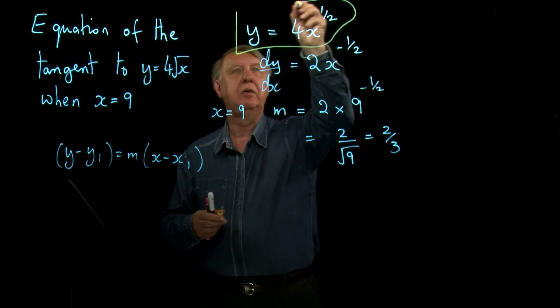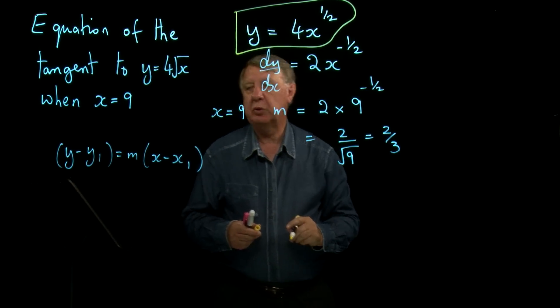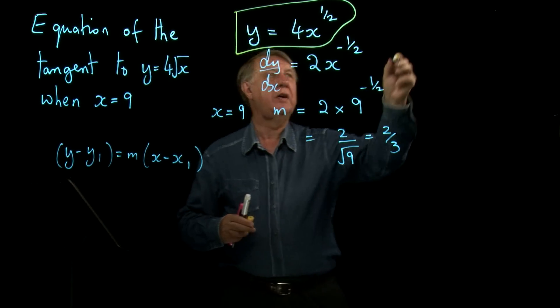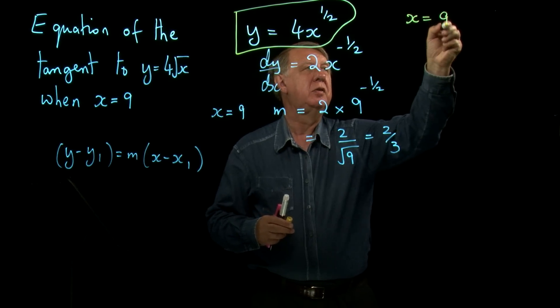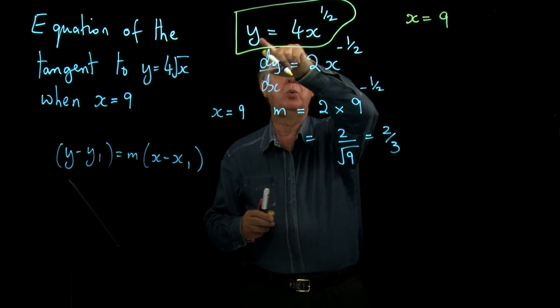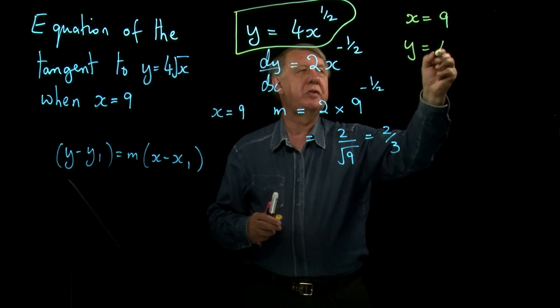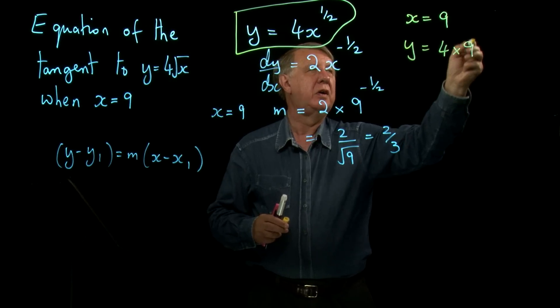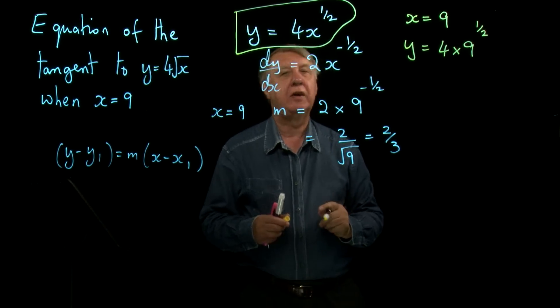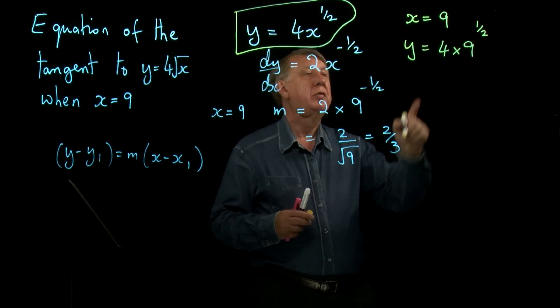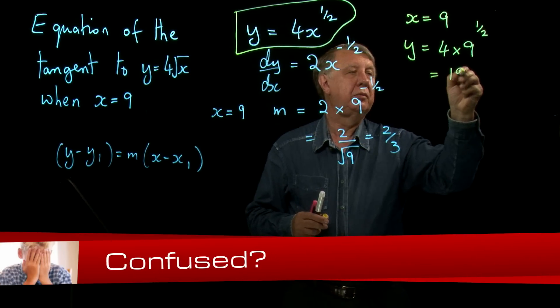Go back to here and we put x equal to nine. So if x equals nine, let's do it over here. Y will be four times nine to the half, and nine to the half is three, four times three is 12.